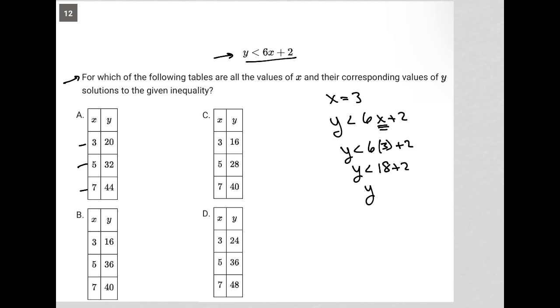So y must be less than 20. For choice A, it says y is equal to 20. That can't be true because we found out that when x is 3, y must be less than 20, so choice A is gone.